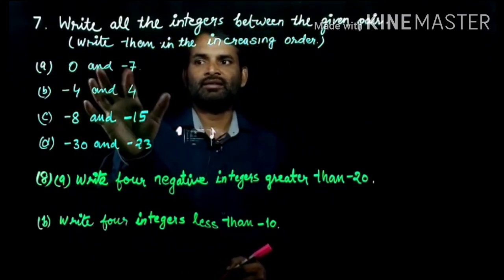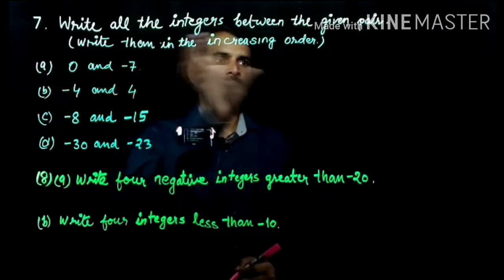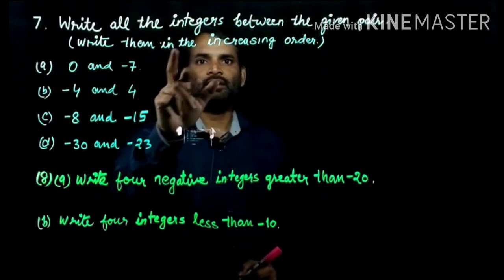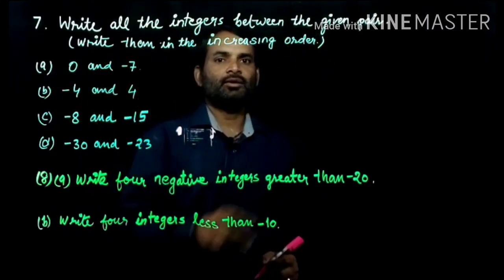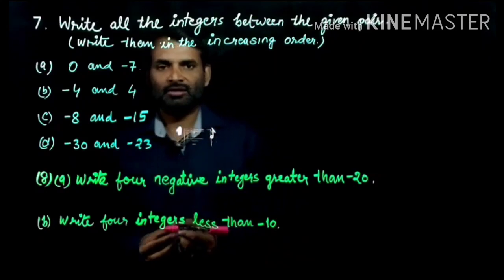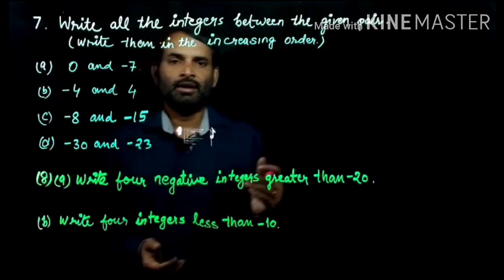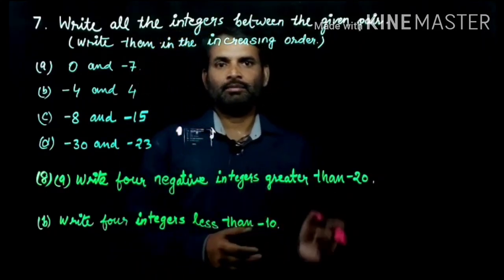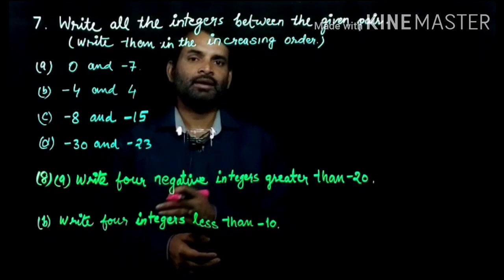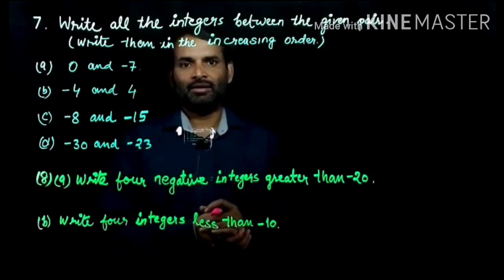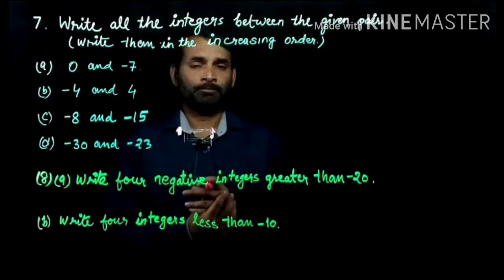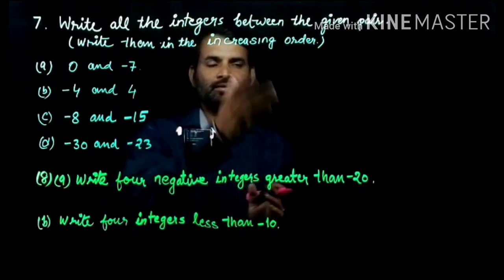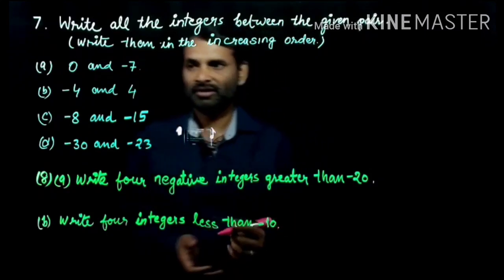The first pair is 0 and minus 7, and write them in increasing order. Increasing order means you write small first, then big — this is the ascending order. Increasing order means the ascending order.